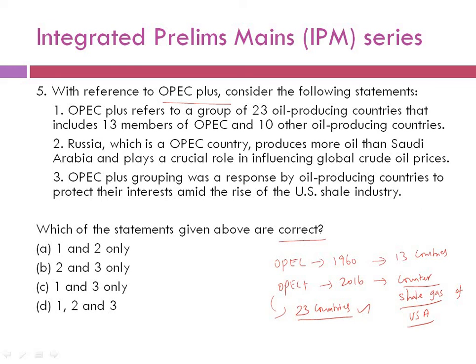Statement 1 — OPEC+ having 23 members — is correct. Statement 2 — Russia being an OPEC country — is wrong; Russia is an OPEC+ country, not part of original OPEC. While Russia does produce more oil than Saudi Arabia (the second part is correct), the first part is wrong, so statement 2 is eliminated. This removes options A, B, and D. Statement 3 — OPEC+ formed as a response to the US shale industry — is correct. The correct answer is Option C — statements 1 and 3 only.